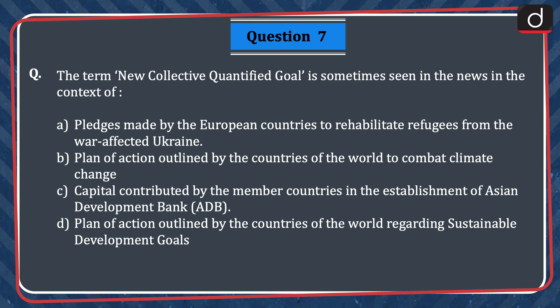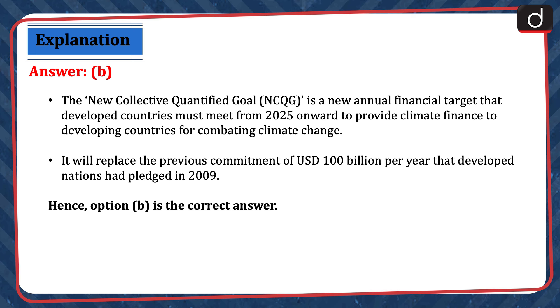Next question: the term 'New Collective Quantified Goal' is sometimes seen in the news in the context of — (A) pledges made by European countries to rehabilitate refugees from war-affected Ukraine, (B) plan of action outlined by the countries of the world to combat climate change, (C) capital contributed by member countries in the establishment of the Asian Development Bank, or (D) plan of action regarding sustainable development goals. The correct answer is option B. The New Collective Quantified Goal is a new annual financial target that developed countries must meet from 2025 onward to provide climate finance to developing countries for combating climate change. It will replace the previous commitment of US$100 billion per year pledged in 2009. Hence, option B is the correct answer.